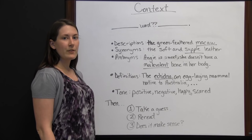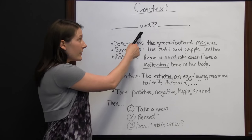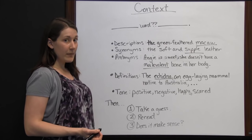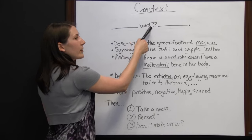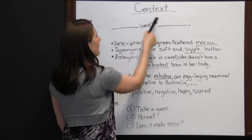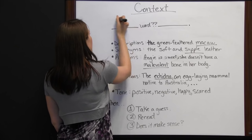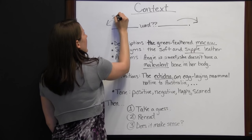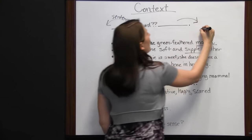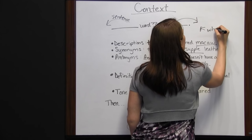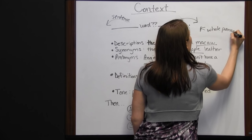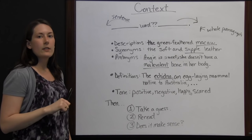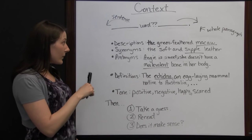Sometimes when you're reading and come across a word you don't know, you can use context clues to make an educated guess about what the word means. When looking at an unfamiliar word, don't just look right before and after the word — you usually want to look at the sentence before and the sentence after, and sometimes even the whole paragraph, to get an idea of what that word means.